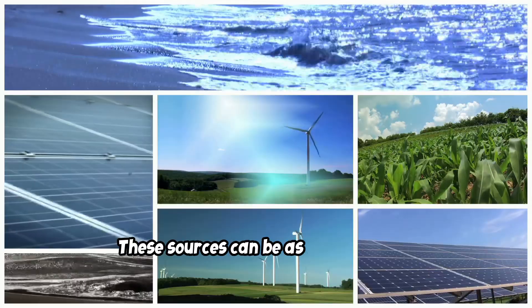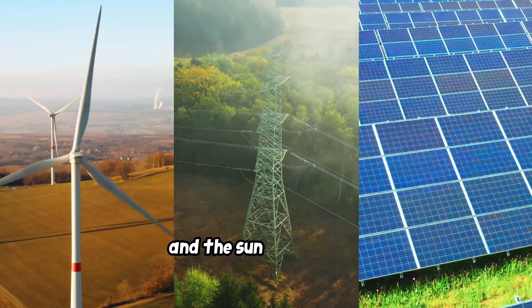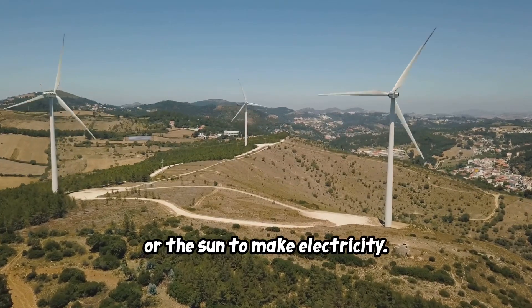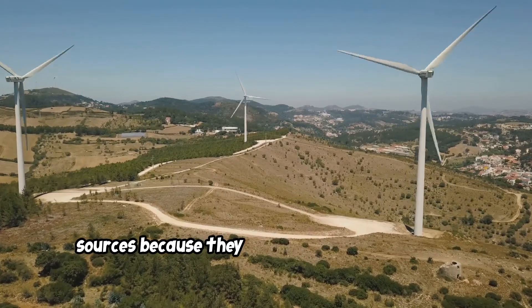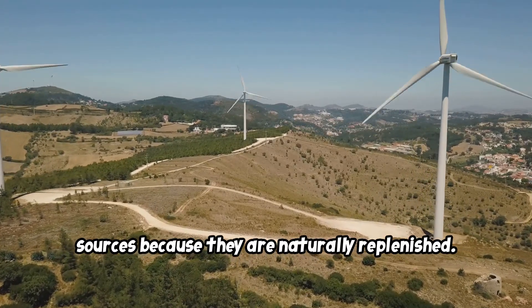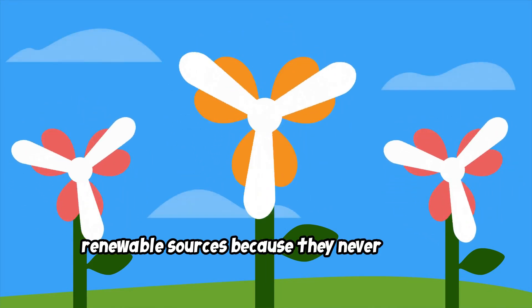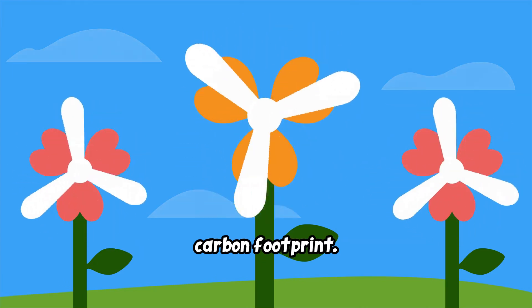These sources can be as varied as the wind that blows, the water that flows, and the sun that shines. Some power plants use wind, water, or the sun to make electricity. These are known as renewable energy sources because they are naturally replenished. These sources of energy are called renewable sources because they never run out. They are sustainable and help reduce our carbon footprint.